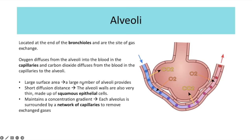The short diffusion distance is because the alveoli walls and the capillary walls are both made up of only a single layer of squamous epithelial cells, which are long and flat. The concentration gradient is maintained because each alveolus is surrounded by a capillary network — as oxygen diffuses in, blood is carried away and constantly replaced by deoxygenated blood. In the alveoli, ventilation constantly brings in new air and removes air rich in carbon dioxide.